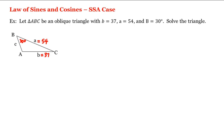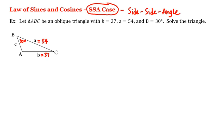Now this is what we call the SSA case, which stands for side, side, angle — because we're given two sides and an angle that's not included between them. Now since we're given a matching angle and side pair, namely capital B and little b, we can apply the law of sines.